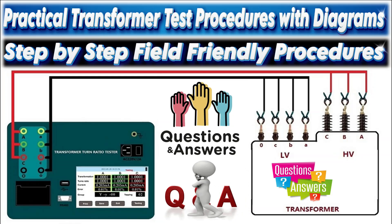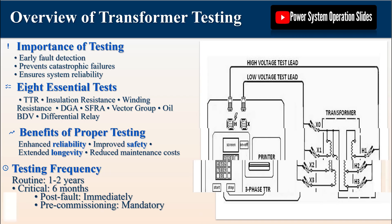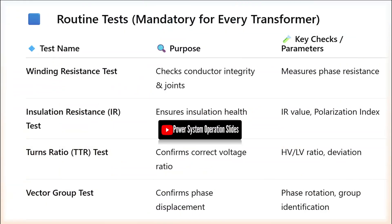Regular testing of power transformers is essential for ensuring their reliability, safety, and longevity in electrical power systems. Transformers are critical assets that require comprehensive monitoring and maintenance to prevent catastrophic failures and extend service life. This document outlines eight essential transformer testing procedures that provide valuable insights into transformer health and condition. Each test serves a specific purpose in detecting different types of faults or deterioration mechanisms, and together they form a comprehensive diagnostic approach.